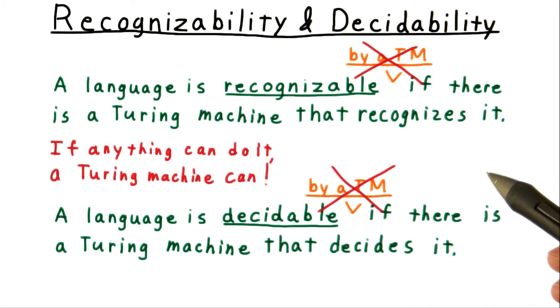Other terms are sometimes used instead of recognizable and decidable. Some say that Turing machines compute languages. So to go along with that, they say that languages are computable if there's a Turing machine that computes them.